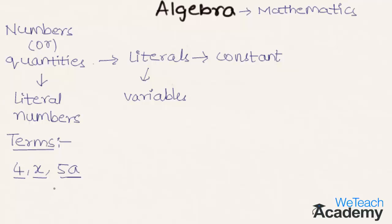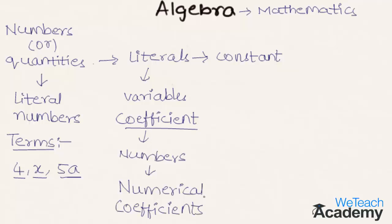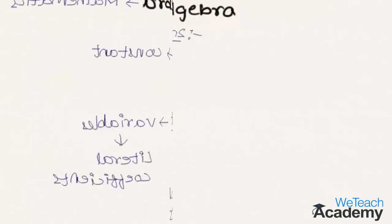Now let us learn the different types of coefficients. If a coefficient is a number, we call it a numerical coefficient. If a coefficient is a variable, we call it a literal coefficient. Let us consider a few examples.